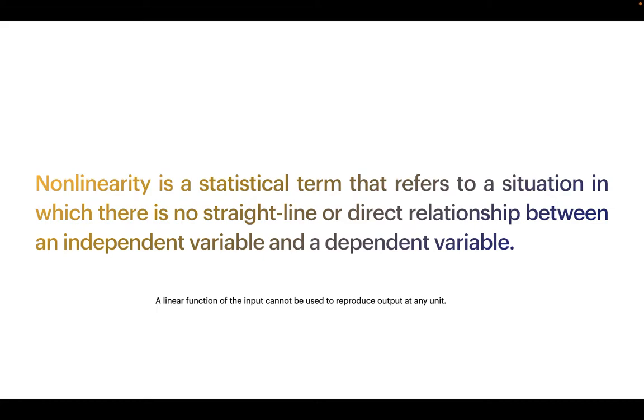A linear function of the input cannot be used to reproduce output at any unit. Because if the function is linear, then even if we add multiple layers or 10,000 layers, it will still produce a linear output for that function. That's why non-linearity is very important in neural networks.